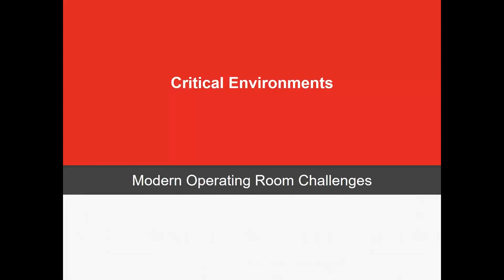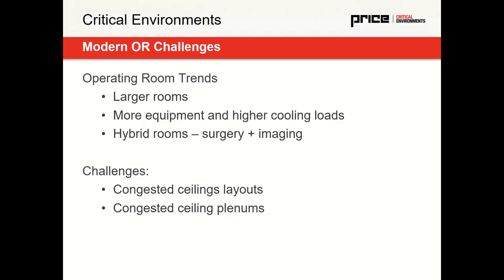Moving into challenges we might see that weren't present previously when designing these spaces — operating rooms tend to be getting larger. What might have been a common 400 or 480 square foot operating room, 600 square feet is probably a lot more common now. There's typically a lot more equipment as well — newer, more advanced technology with higher loads in the space. Hybrid rooms are also becoming very popular: the combination of a surgery and an imaging space into one zone, which has an additional set of requirements. This leads to very congested ceiling layouts trying to fit all the different diffusers and pieces of equipment, as well as congested ceiling plenums.